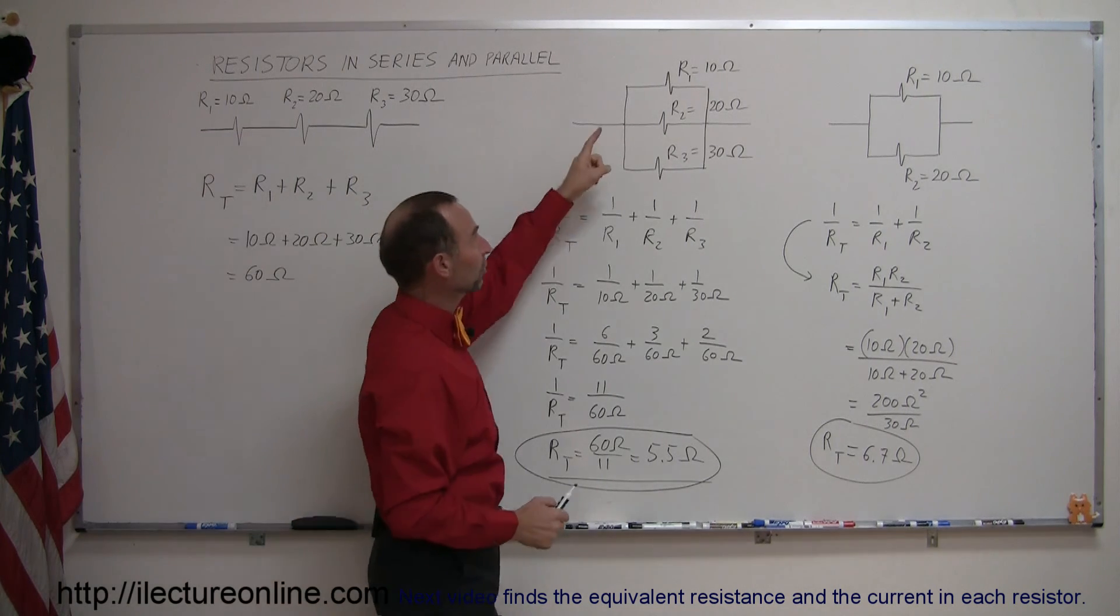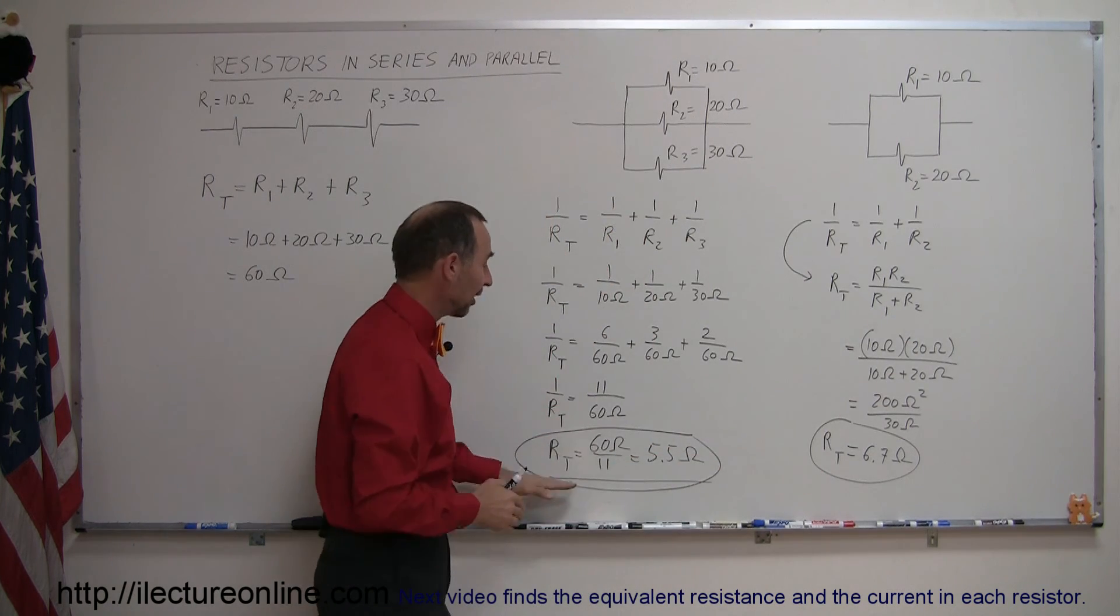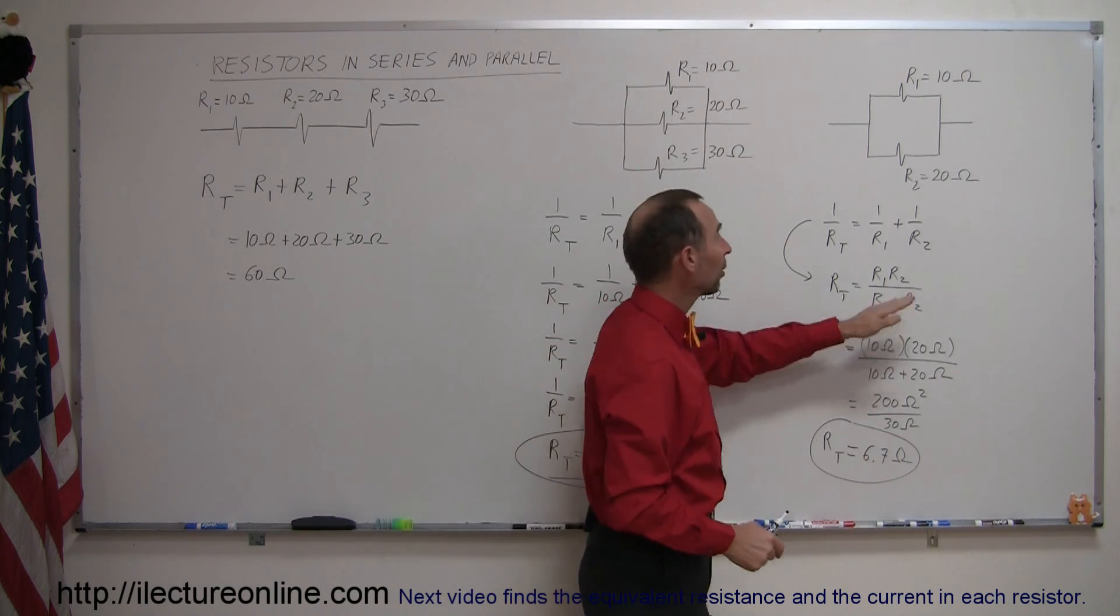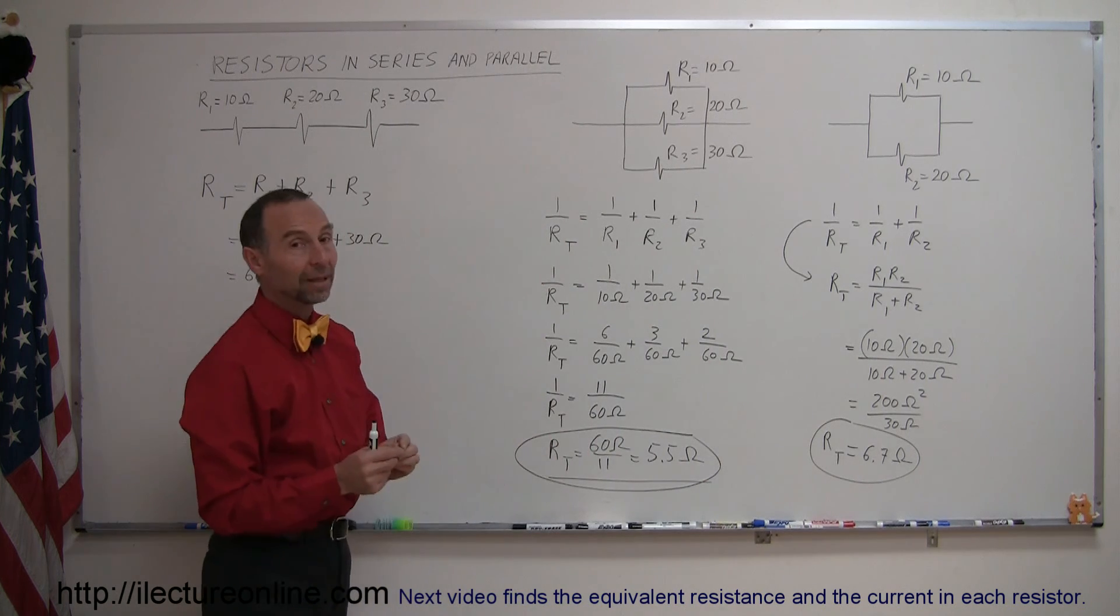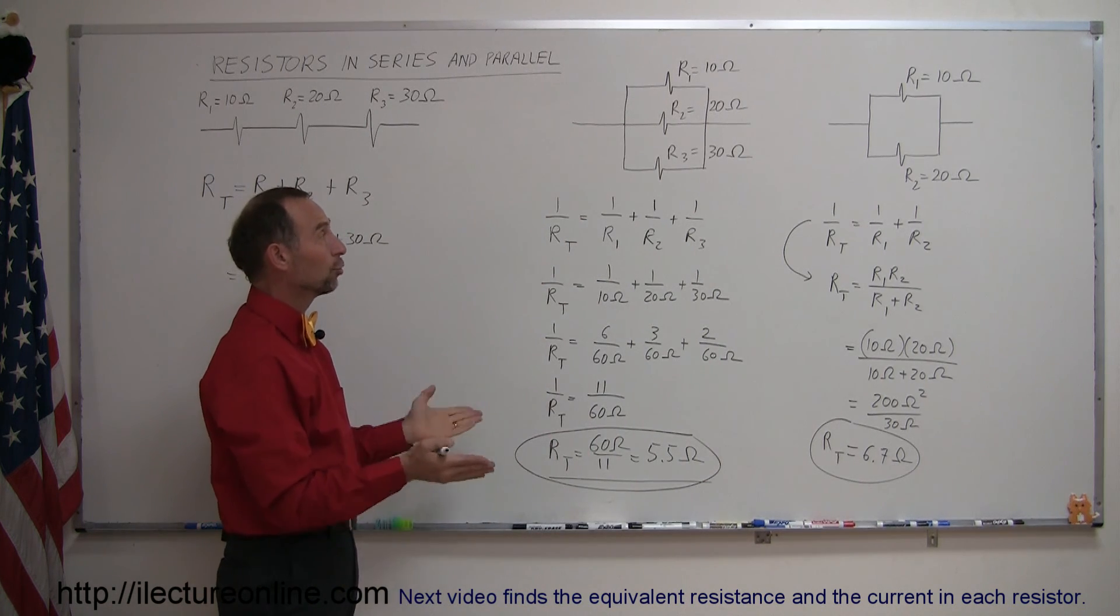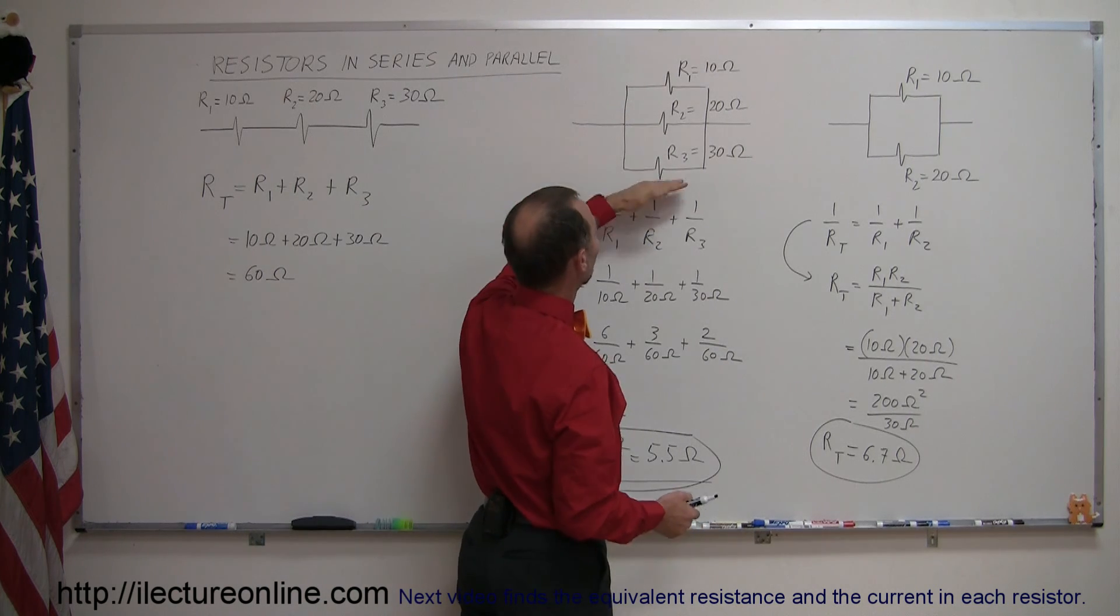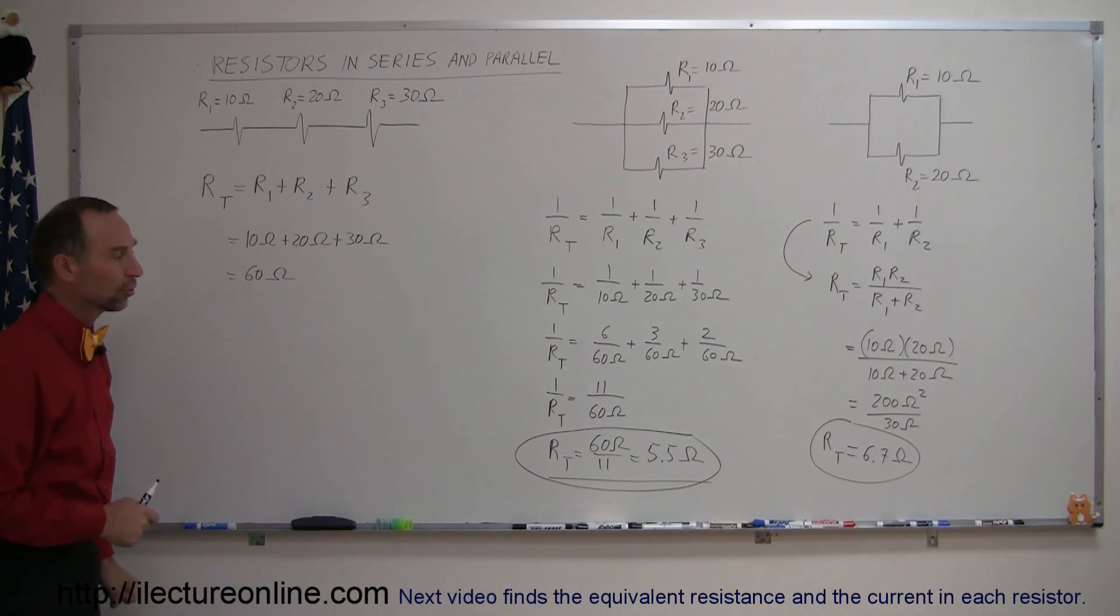However, when you place the resistors in parallel, notice that the equivalent or total resistance is actually smaller than the smallest of the resistors there. Here again, this is smaller than either one of the two resistors there. So notice that by placing resistors in parallel, you actually reduce the resistance because you offer more paths, more choices for the charges to go through the circuit, and therefore the overall resistance has been reduced.